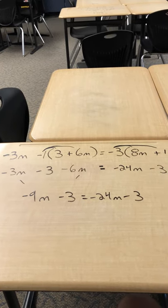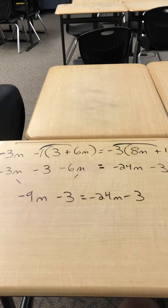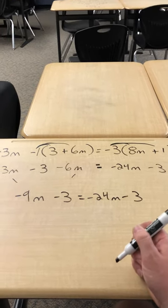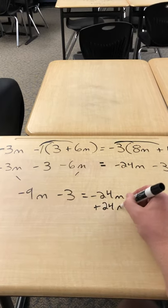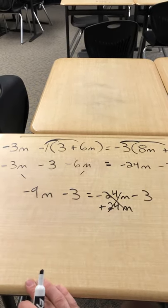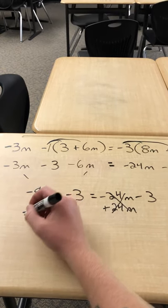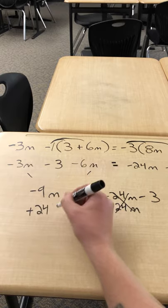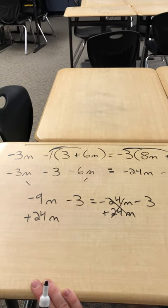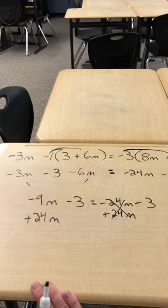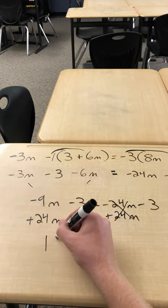So now the goal is to get all the numbers on one side and all the variables on the other. I personally like dealing with positive variables. So I'm going to add the 24m to get rid of it and then move it over to the other side. So that's canceled on that side. So I have a positive 24m because I added it to get rid of it. So negative 9 plus 24, it's the same thing as 24 minus 9, which is 15. So 15m.